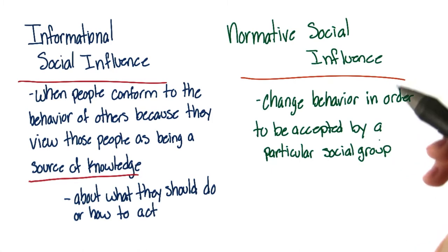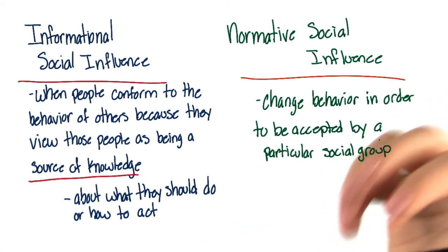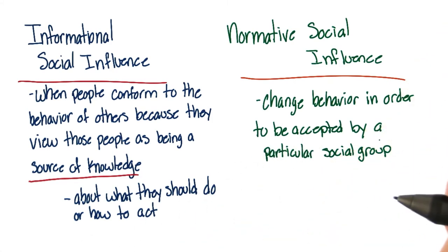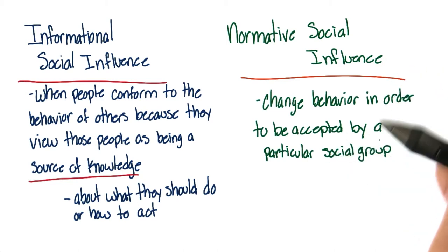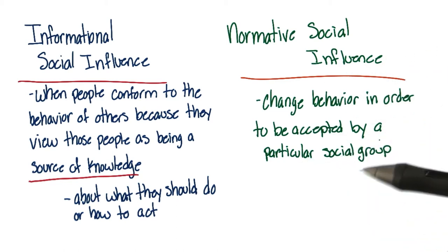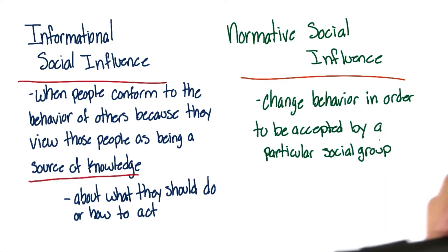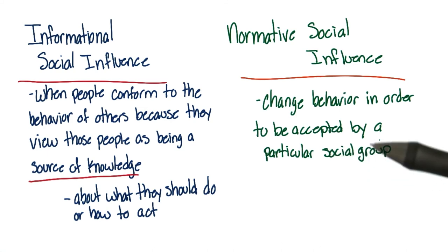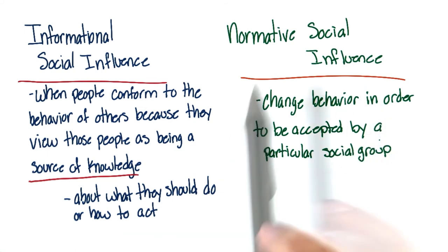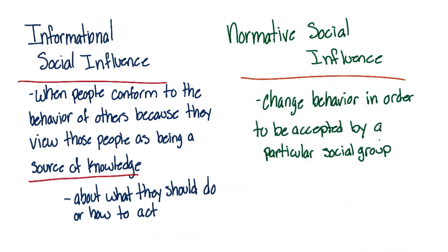For example, do you dress similarly to your friends? Do you listen to the same type of music as your friends? Have you ever tried drugs or alcohol to be accepted by a particular social group? If you've changed your behavior in order to gain acceptance by a particular social group, social psychologists would say that this is due to normative social influence.